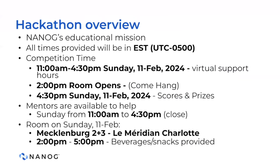A quick overview of the Hackathon location and time. All times provided will be in Eastern Standard Time, or UTC-5. The competition hours start at 11 a.m. on February 11th, and the competition will go until 4:30 p.m. We will not have a room at the conference hotel until 2 p.m., but please come hang in the room with us at 2 p.m. — we'll be able to start virtually. And then at 4:30 p.m. we'll have the room for another half hour to wrap up, go over scores and prizes.